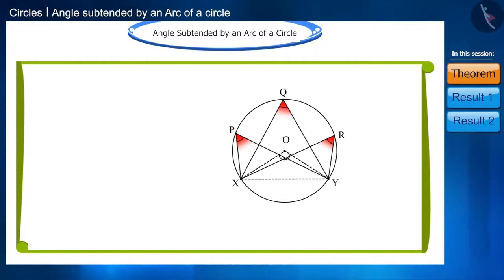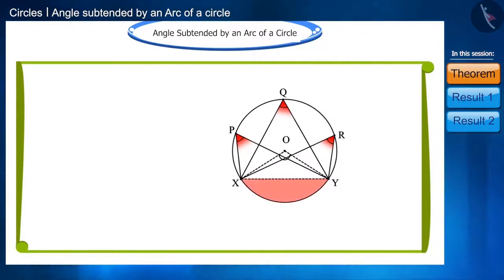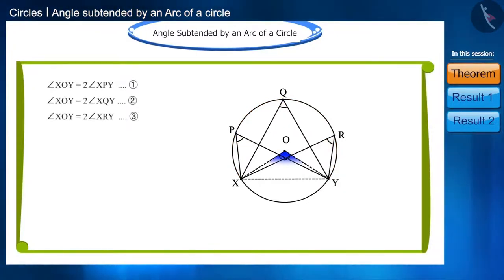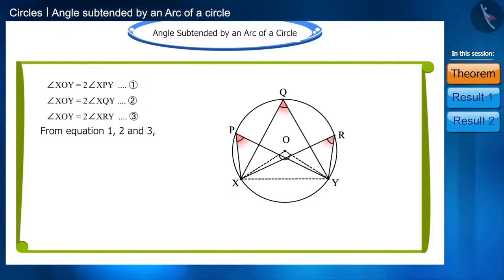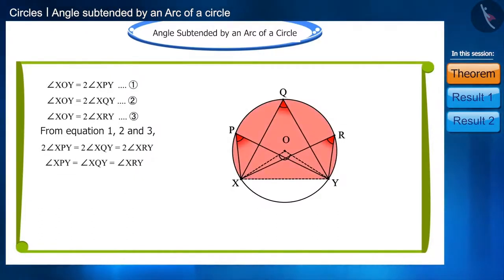Let's go ahead. Observe this figure. Angles XBY, XQY, and XRY are all angles subtended by the same arc XY at different points on the remaining part of the circle. Thus we find that all these angles are equal, since all these angles are located in the same segment of a circle. Therefore, we can say that angles in the same segment are equal.